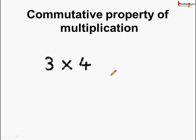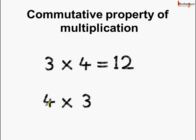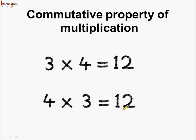According to commutative property of multiplication, 3 multiplied by 4 is equal to 12. And if we change the order of multiplication, 4 multiplied by 3 is also equal to 12. So we can change the order of multiplication but the product remains unchanged.